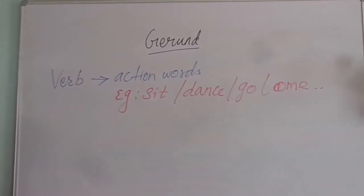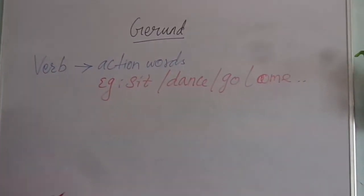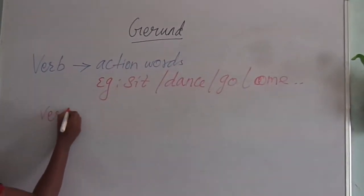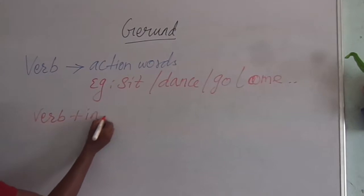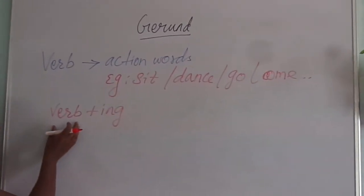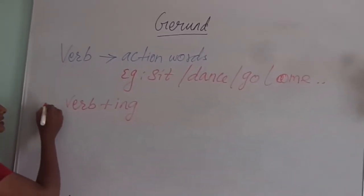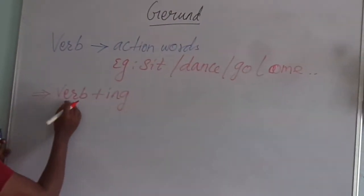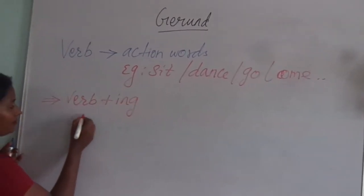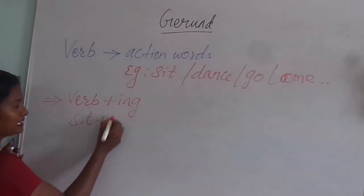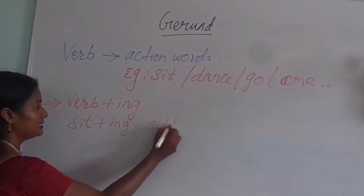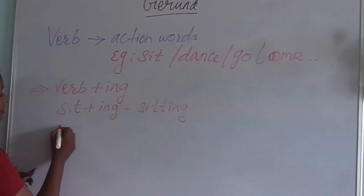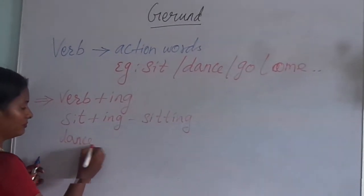Together, we need the gerund. Verb in the setting — gerund, verb. We need the formula. For example: sit. The parents are sitting. Dance.